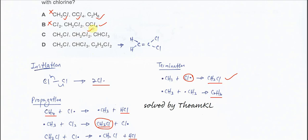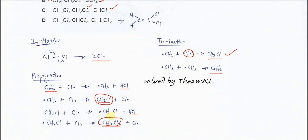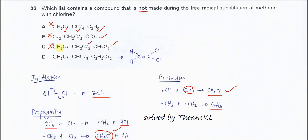CH2Cl2 also can form, CHCl3 also can form. When the reactions continue it will form CH3Cl, then CH2Cl2, then CHCl3. So C is also not the answer because all of these can form from the reaction.